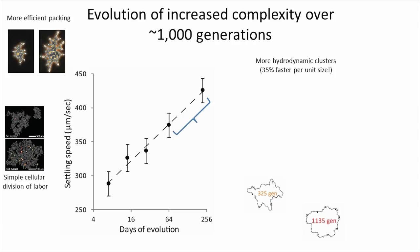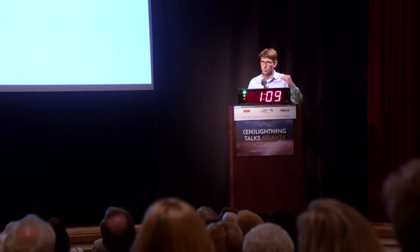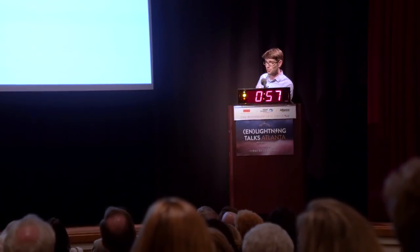This is a 1,000-generation experiment where we're selecting for our yeast to make it to the bottom of a test tube fast — and they get better at doing that. But it's not a trivial thing, because in order to get faster settling and grow bigger, they need to figure out how to circumvent space constraints. You can't just keep adding cells to the group because pretty soon you have nowhere to put them. So one of the first things they evolved is to form more elongate cells, which actually pack more efficiently in three-dimensional space, letting them make more cells per group. Snowflake yeast figured this out after about eight weeks; human physicists took 400 years since Kepler to figure it out.